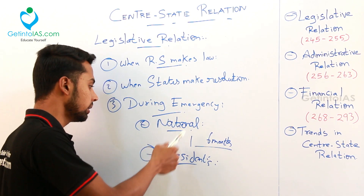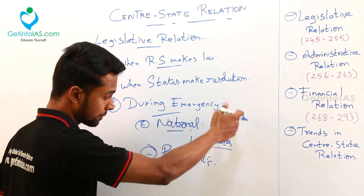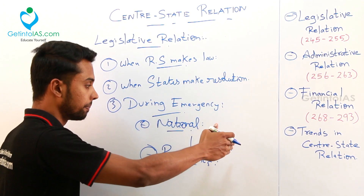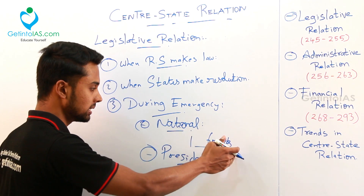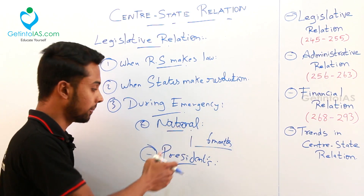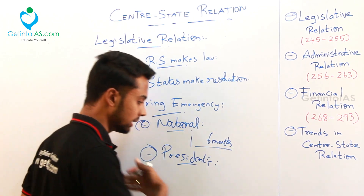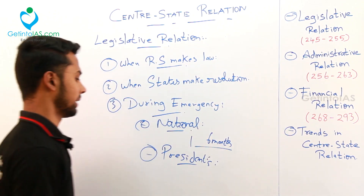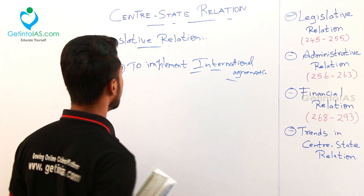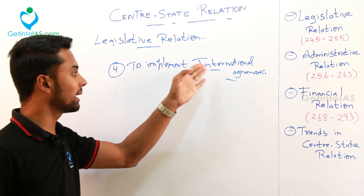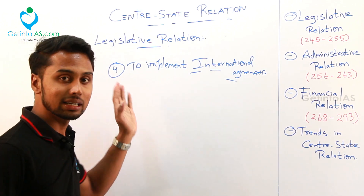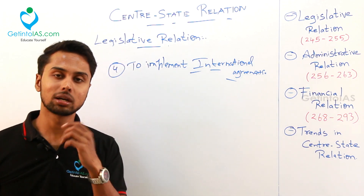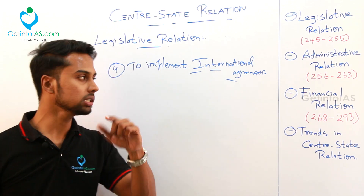But you can't come to the conclusion that India is a federal country, because there is the counter — which is non-federalism, which is nothing but the unitary form of government. India is also having the features of the unitary form of government. There are some five or six features each for federalism and unitary that you can see in your book.